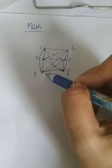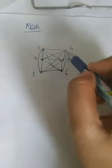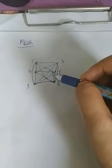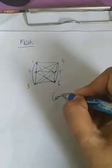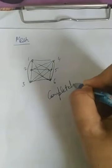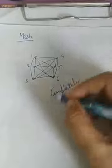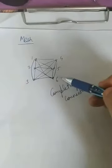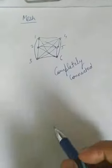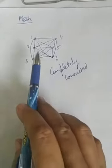mesh topology. So every computer is connected with all the other computers. This topology is also called completely connected. All computers are connected with each other. This is mesh topology - maximum number of